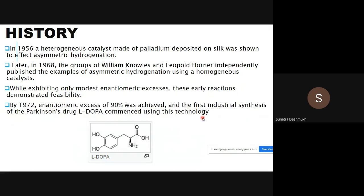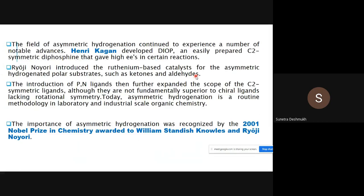By 1972, they achieved an enantiomeric excess of up to 90 percent. The first industrial synthesis of the Parkinson's drug L-DOPA was accomplished using this technology, with 90 percent enantiomeric excess, by scientist Knowles. The field of asymmetric hydrogenation continued to experience a number of notable advances.